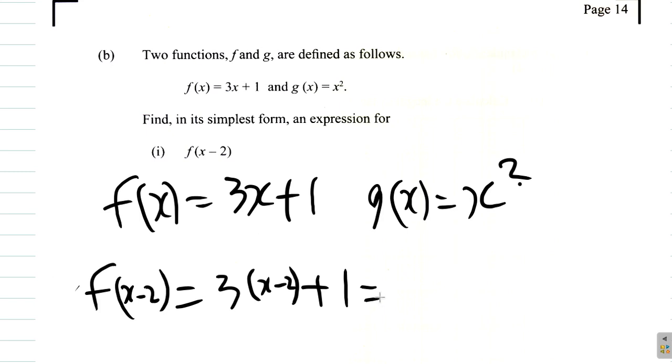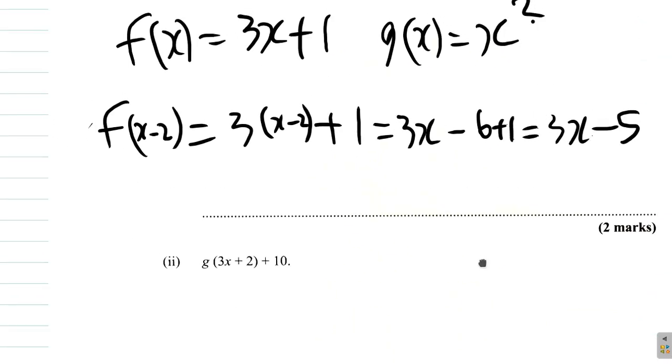So, what do we have? Multiply out the brackets. 3x minus 3 times 2, 6 plus 1 gives you 3x. Negative 6 plus 1 is negative 5, minus 5. So, it's 3x minus 5.